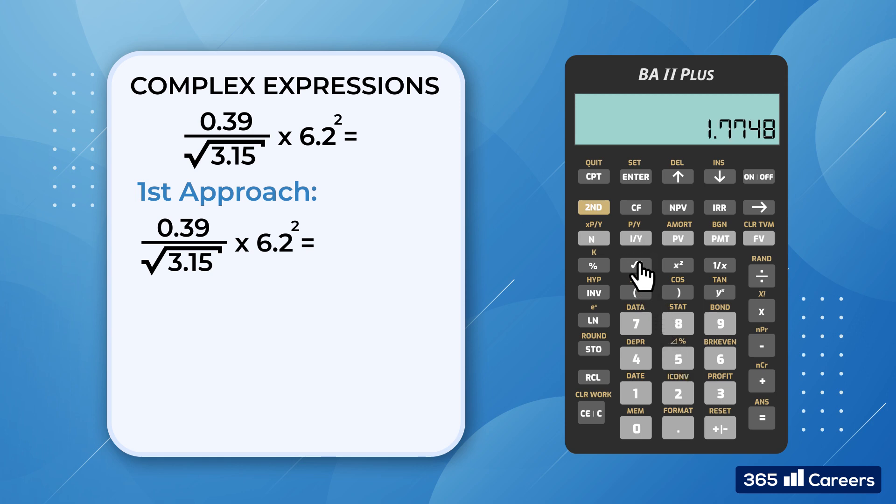As you can see on the display, the result is 1.77. This is the square root of 3.15. Then we press the multiplication sign to see that the interim result is 0.2197. We enter 6.2 and press the x to the power of 2 key to obtain 38.44. At the end, we hit the equal sign to obtain 8.4468.